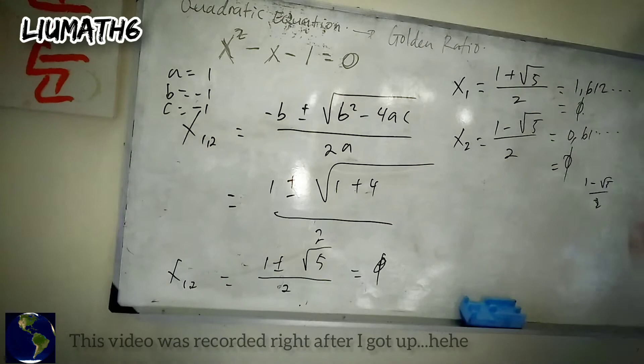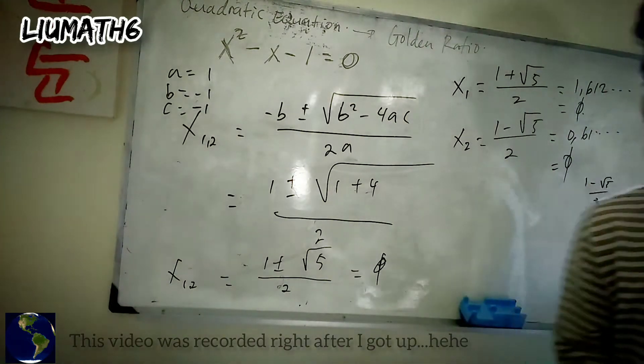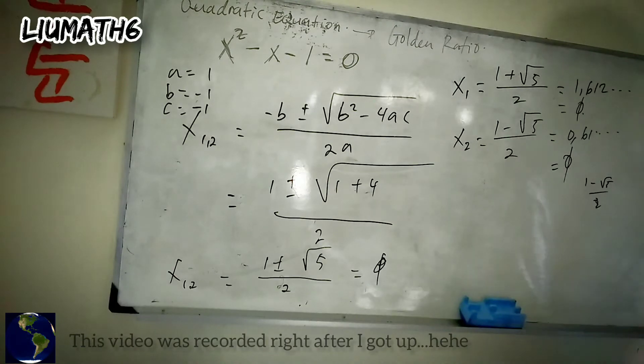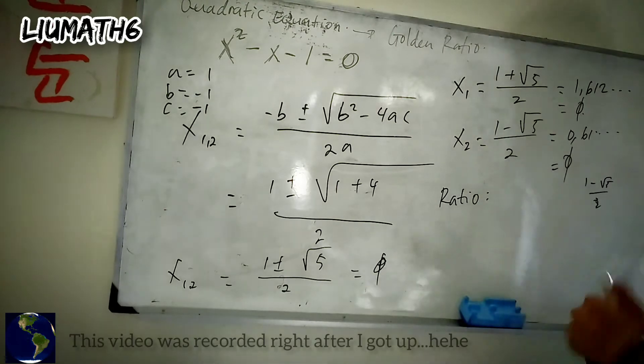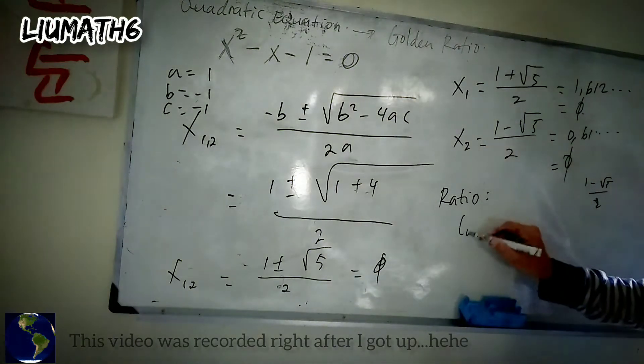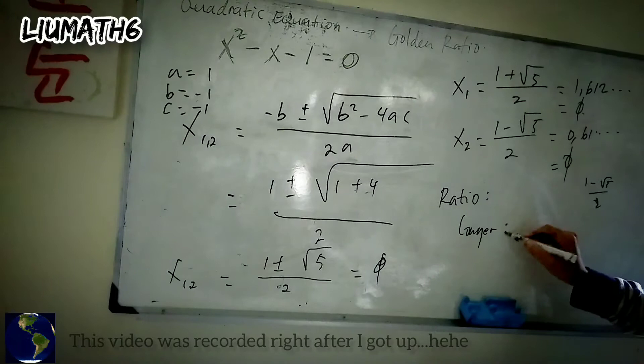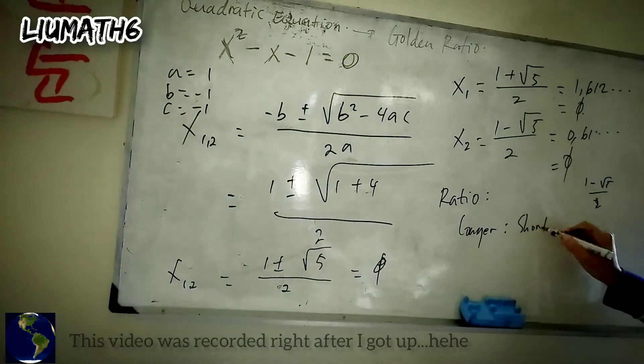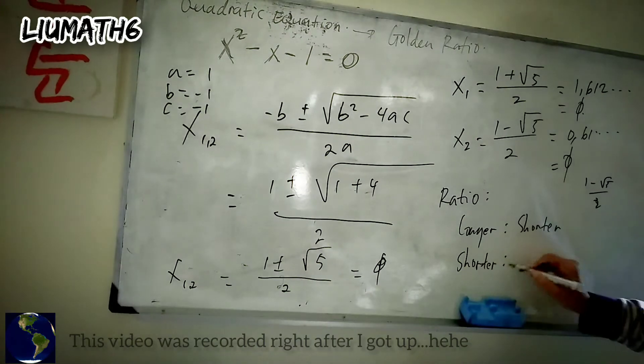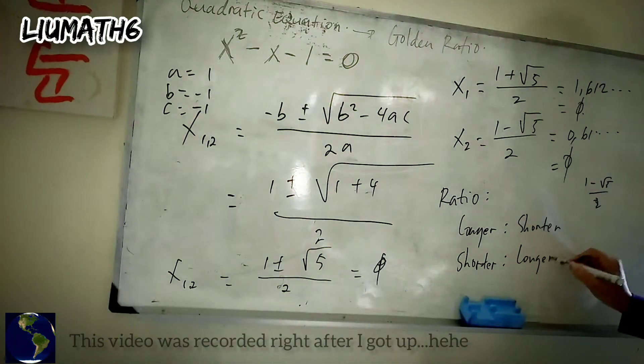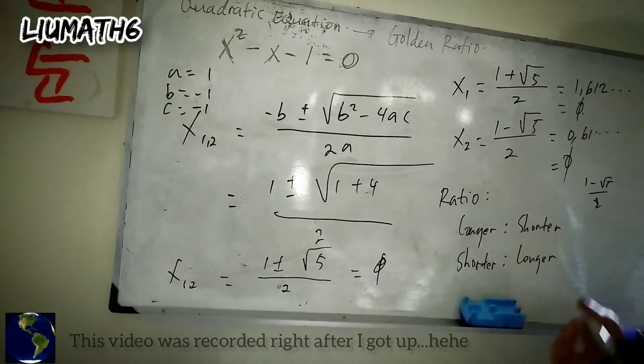So this value and this below, they are the value of golden ratio. And maybe you're wondering they're different, right? So as you know that a ratio, you know, we have two definitions for ratio: longer to shorter and shorter to longer. So both of these are ratio; they are the same.